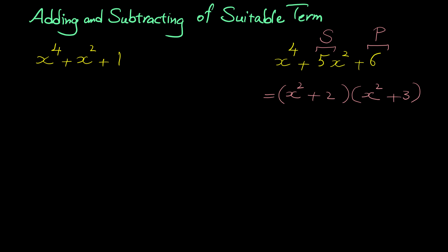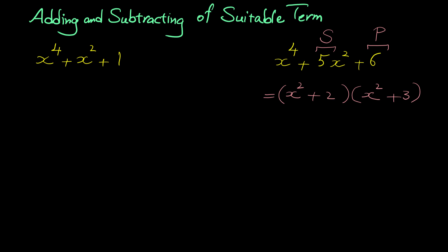But if we try this method for the other example, x to the fourth plus x squared plus one, it doesn't work. If you try to find two numbers whose product is one and whose sum is one — the two numbers with product one are one and one, but one plus one is two, not one; or negative one and negative one, but their sum is not one either. So you cannot find any two numbers with product one and sum one, meaning this method doesn't work here. We need a more advanced technique.